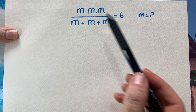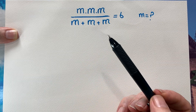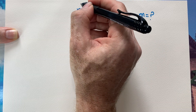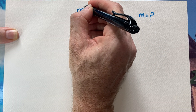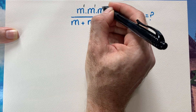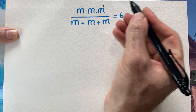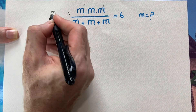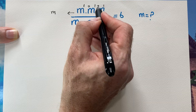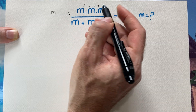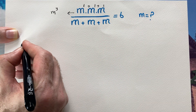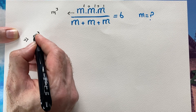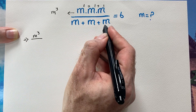To start the solution, I'm going to work on the left-hand side, which says m times m times m. As you know, m can be written in the form of m raised to the power of one. We have the same base, so we simply add the exponents: one plus one plus one equals three. So the top of the left-hand side is m cubed.